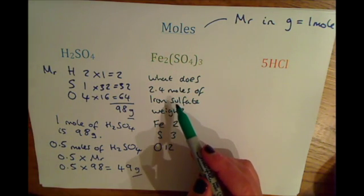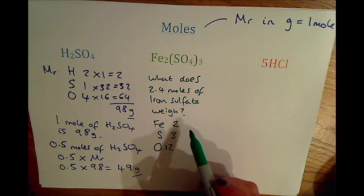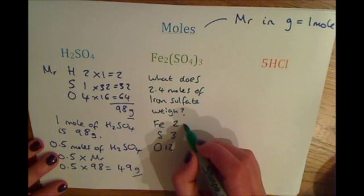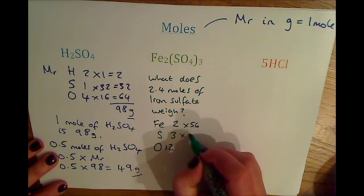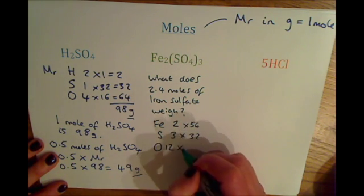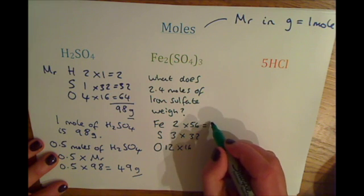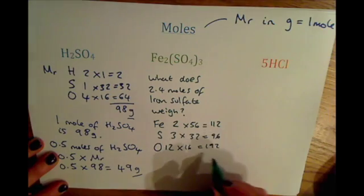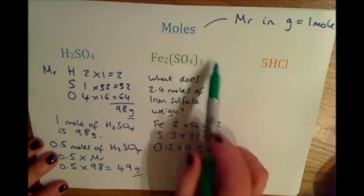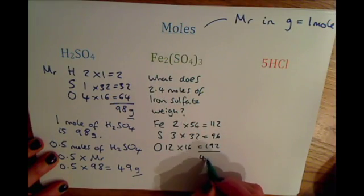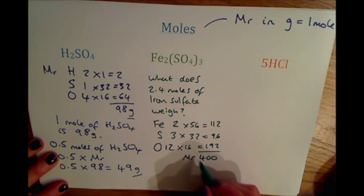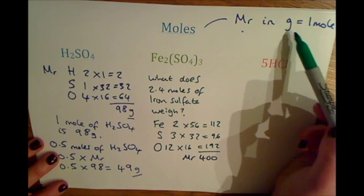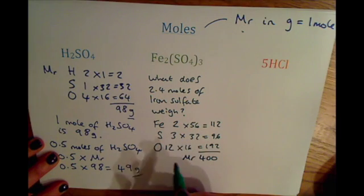And using our periodic table on a data sheet, we can see the relative atomic masses of these elements. So iron is 56, sulfur is 32, oxygen is 16. And using these, we can work out that the relative formula mass of iron sulfate is 400. So the MR equals 400, and because MR in grams equals one mole, we know that one mole equals 400 grams.